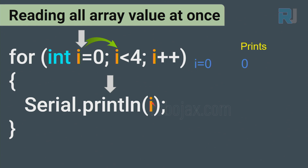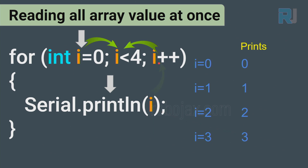After printing, i is incremented with i++, becoming 1. Is 1 less than 4? True — print 1. Then i becomes 2 — true, print 2. Then i becomes 3 — true, print 3. Then i becomes 4 — is 4 less than 4? False, so the loop exits. The initialization part runs only once at the beginning.